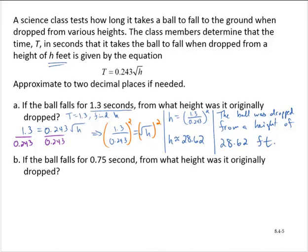Exercise b, if the ball falls for 0.75 second, from what height was it originally dropped? This is basically the same exercise with a different number. So t is equal to 0.75, and we're asked to find h. So we can write a similar equation. 0.75 is equal to 0.243 times the square root of h.